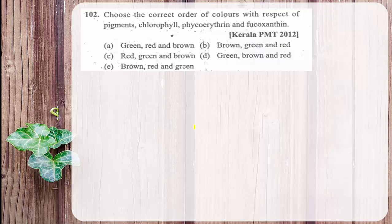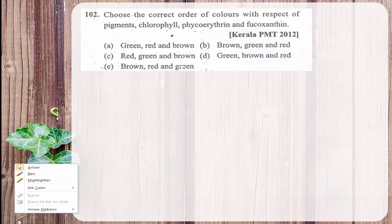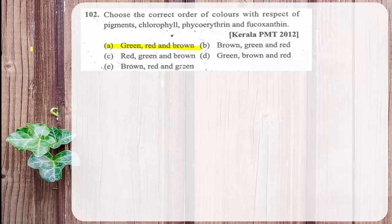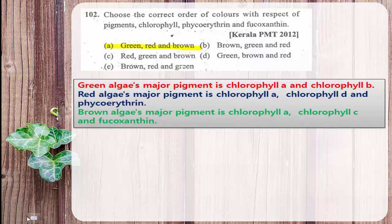The next question: choose the correct order of colors for the pigments chlorophyll, phycoerythrin, and fucoxanthin. Chlorophyll is green. Phycoerythrin is red. Fucoxanthin is brown. Option A is the right answer. Green algae contain chlorophyll A and B; red algae contain chlorophyll A and D along with phycoerythrin; brown algae contain chlorophyll A and C along with the brown pigment fucoxanthin.